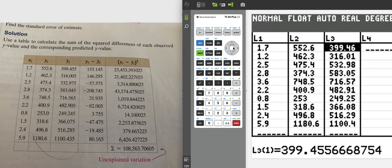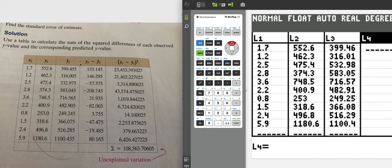Next column is y minus y-hat, so this value minus this one. I would just go L2 minus L3, and there they are.